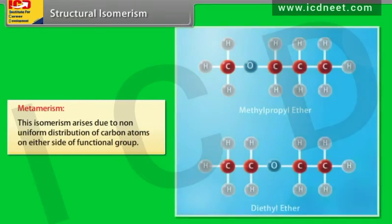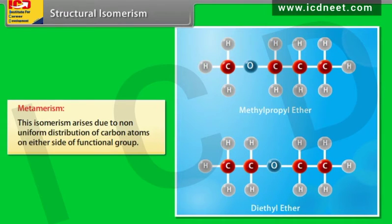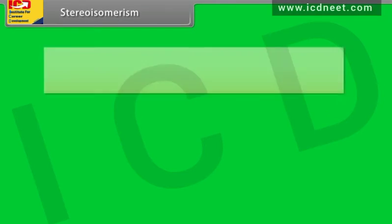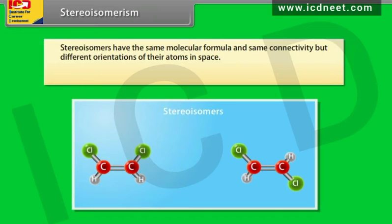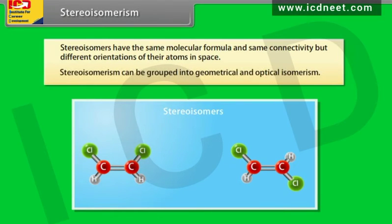Metamerism: this isomerism arises due to non-uniform distribution of carbon atoms on either side of a functional group — for example, methyl propyl ether and diethyl ether. Stereo-isomers have the same molecular formula and same connectivity but different orientations of their atoms in space. Stereo-isomerism can be grouped into geometrical and optical isomerism.